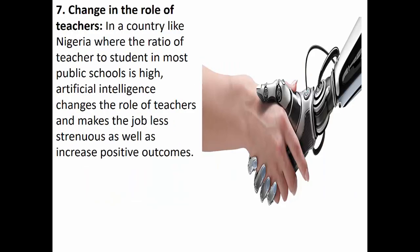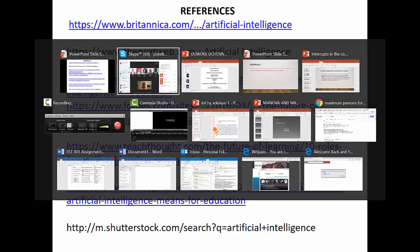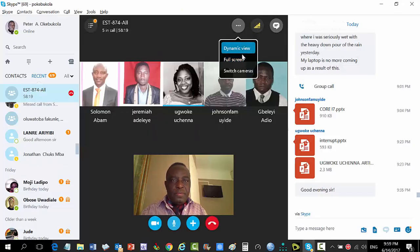Seventh point: AI changes the role of teachers. I am a facilitator and teacher. If I have AI in my school, I might limit my job to that of a facilitator — AI tutors can help with teaching the students and presenting topics. My job would be to provide human interaction with my students. That is my conclusion. My final slide has references. Thank you.